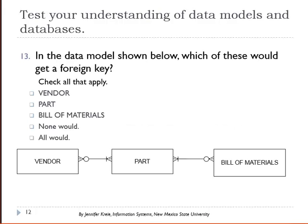In the data model shown below, which of these would get a foreign key? Vendor, part, bill of materials, none of these would, all of these would.